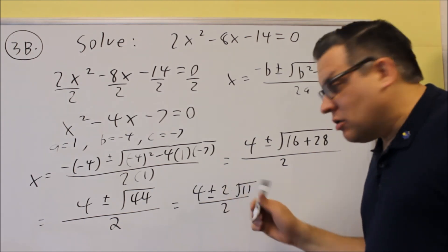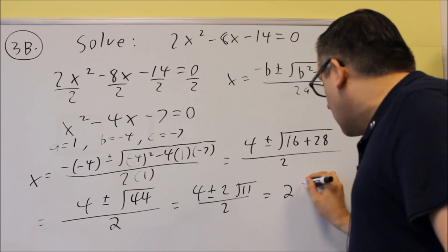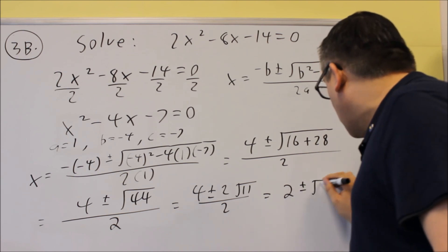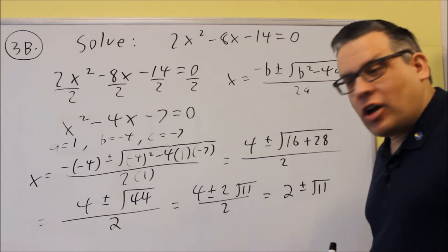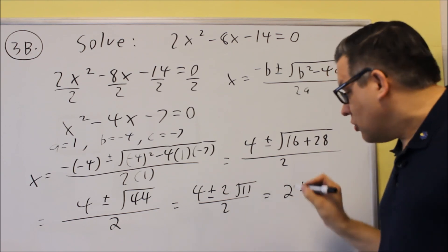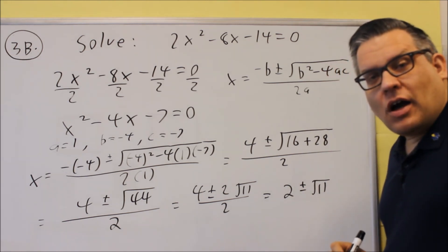Now each of these are divisible by 2, so let's do that. We'll get 2 plus or minus square root of 11, and then that right there would be your final answer. You do get 2 answers here, 2 plus or minus root of 11. That's your final answer.